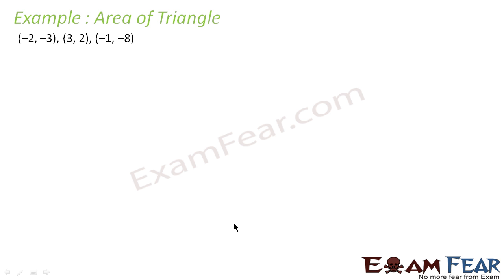I will take one more example because it is a very critical topic to find the area. So let us find area of another triangle with the vertices (-2, -3), (3, 2), (-1, -8). Same thing here. So this is x1, y1, x2, y2, this is x3, y3.